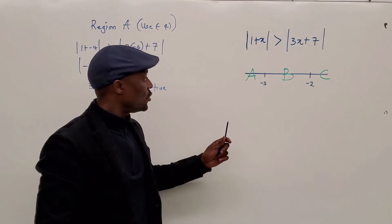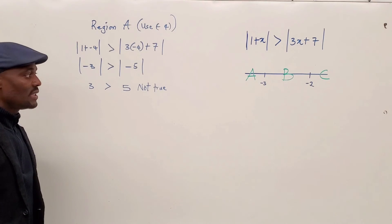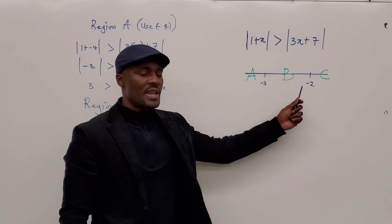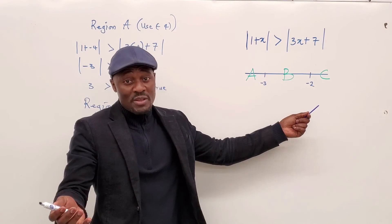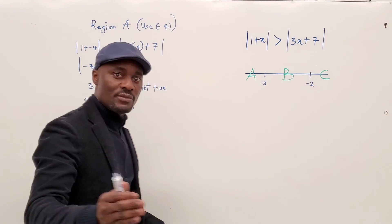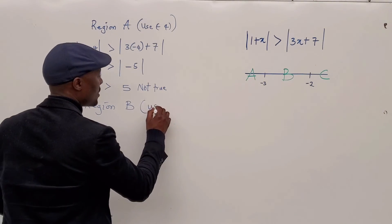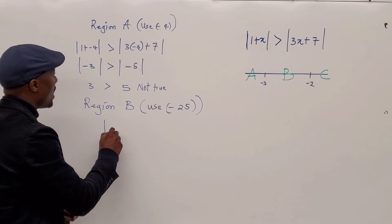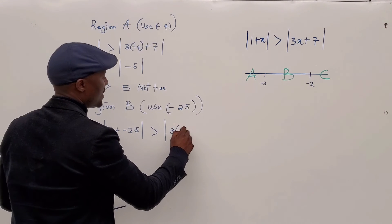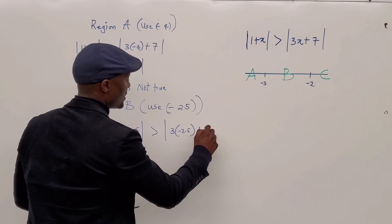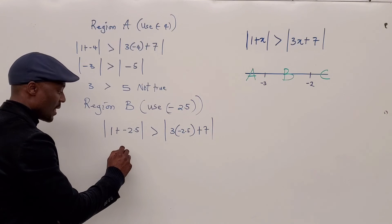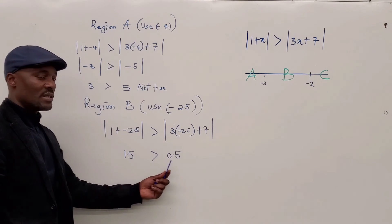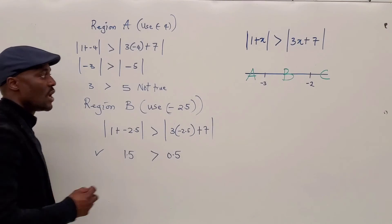The next thing is to test region B. Region B is any number between negative 3 and negative 2 — that could be negative 2.5, negative 2.1, any number between these two. So I'm going to use negative 2.5. Plugging in: the absolute value of 1 plus negative 2.5 is greater than the absolute value of 3 times negative 2.5 plus 7. The absolute value eventually gives 1.5, and the absolute value of the other side is 0.5. Since 1.5 is greater than 0.5, this is correct — we can accept region B.